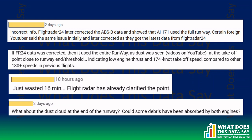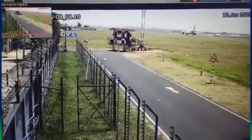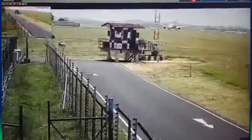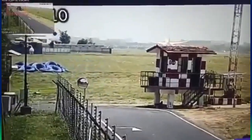Quite a few viewers objected, saying that the FlightRadar24 data I had shown for the June 12th Air India 171 flight was incorrect, and that FlightRadar24 had later corrected the data showing the flight had used the entire runway at Ahmedabad airport — which is three and a half kilometers. There was also a question about why there was a dust cloud at the end of the runway and why, if the flight used the full three and a half kilometer runway, it took off right at the end.